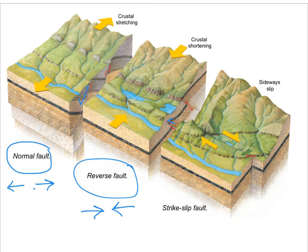And then lastly, you can have a strike-slip fault. What is being shown here is a right-lateral strike-slip fault, but of course you can have left-lateral faults as well. Faults are a great lead-in to earthquakes because earthquakes happen when there is slip — when two blocks of rock slip past one another along a fault surface.